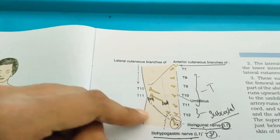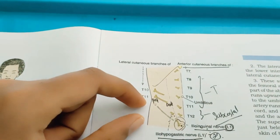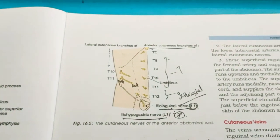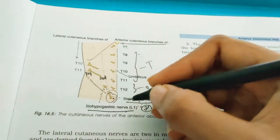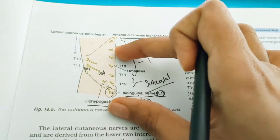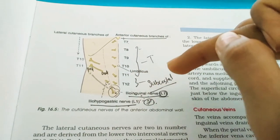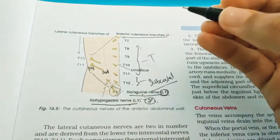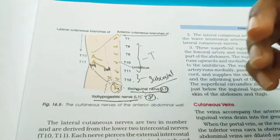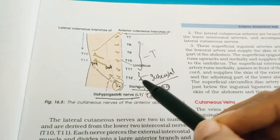The lateral cutaneous branches of the subcostal nerve (T12) and iliohypogastric nerve (L1) descend over the iliac crest and supply the skin over the anterior superior gluteal region. So T12 and iliohypogastric not only supply the anterior abdomen but also act as lateral cutaneous branches to the anterior superior gluteal region.